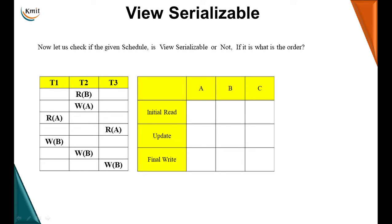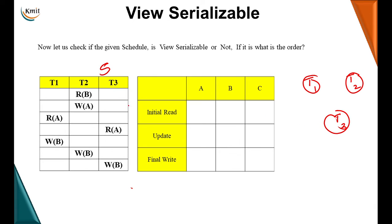Now let's see how to determine the order of execution when converting to a view equivalent schedule. Let's work through this example. First, let us check whether the schedule is conflict serializable. There is a read B operation — is there a write B? Yes, so there is an edge T2 to T1. Then for write B in T2, there is also an edge T2 to T3.